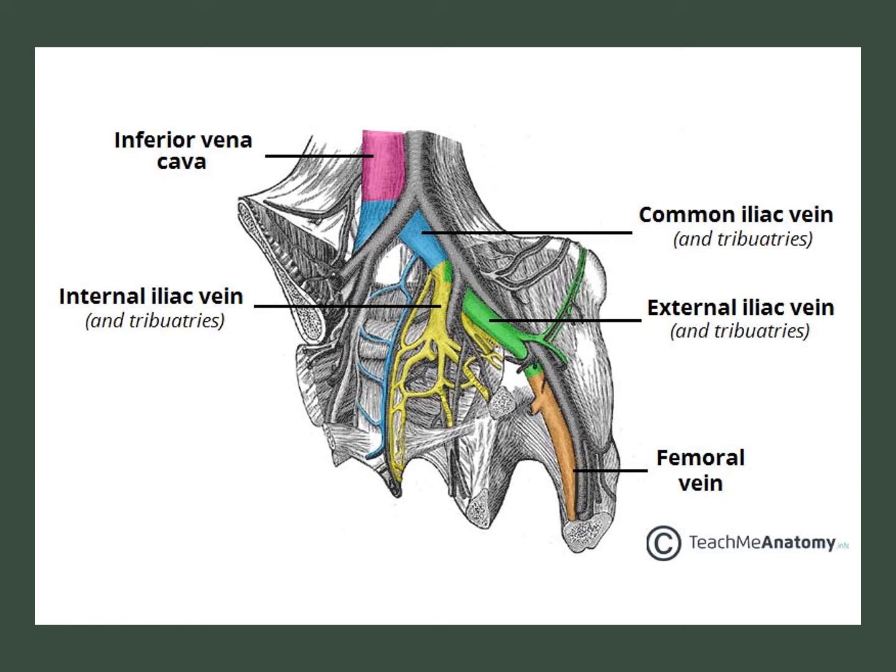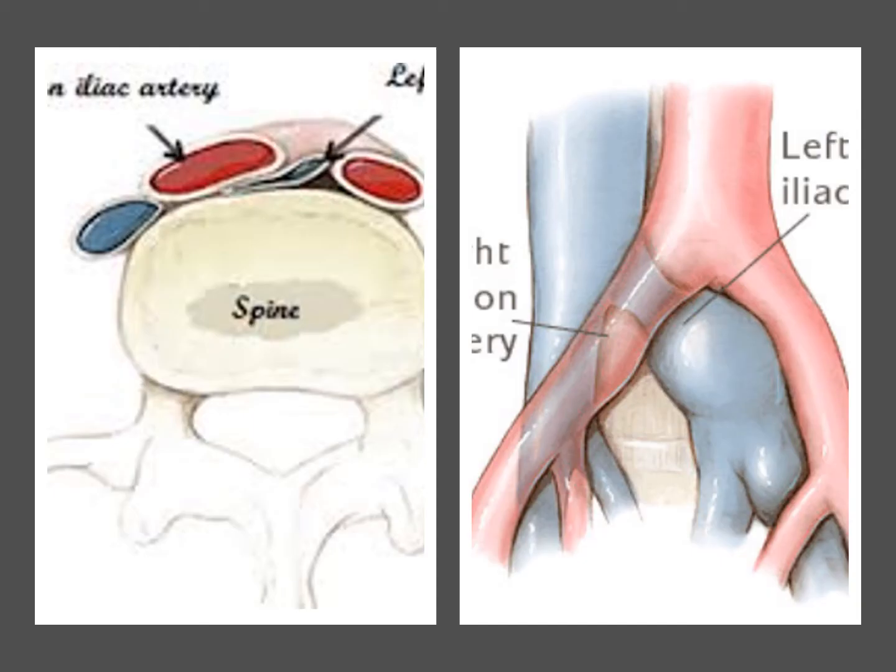The common iliac veins join together to become the inferior vena cava, depicted here in purple. The inferior vena cava commonly begins at the level of the fifth lumbar vertebrae, penetrates the diaphragm, and terminates in the right atrium.